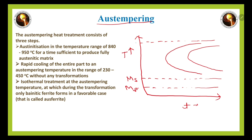In the austempering process, we heat the steel above the critical temperature and hold for some time. Then we perform rapid cooling down into the bainitic region, approximately between 230°C and 450°C. Above this range is the pearlitic region; within this range is the bainitic region.